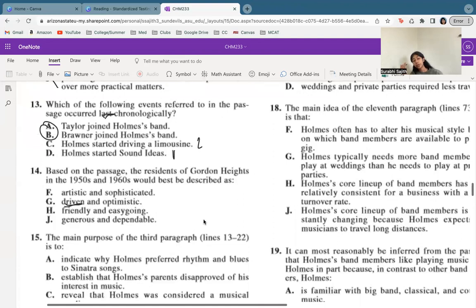I'd say driven is definitely going to be our best option because they're talking about how they work very hard. We do not see artistic, so that's definitely not correct. Friendly and easy going, while that might be true, we don't see evidence to support that. So keep in mind for every answer, we definitely need evidence. And out of all of these, the answer we best have evidence for is going to be G.